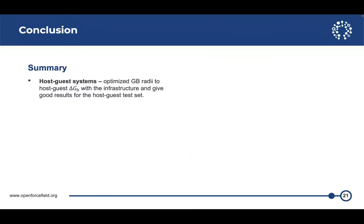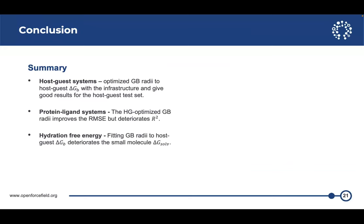Just to summarize for host guest systems, we have this infrastructure in place and we can actually optimize forcefield parameters. In this case, optimize the GB radii and we show that it gives good results for the test case, better than a training set. When we apply it to protein ligand systems, it did improve the RMSE but made the correlation worse a bit. For hydration free energies, it totally went the other way. It's just no good. And when I try to optimize to both of them, ForceBalance just can't find good parameters that can fit to both of them.